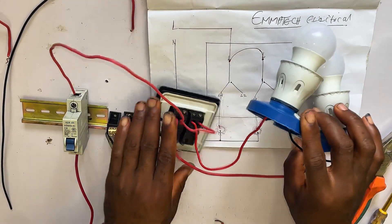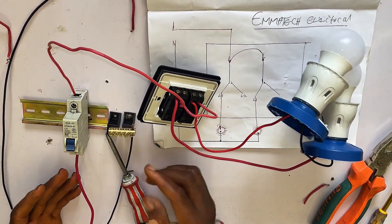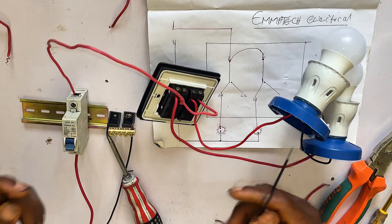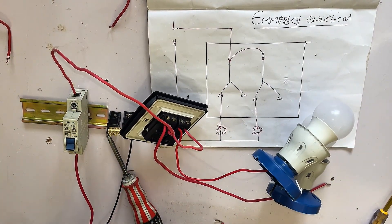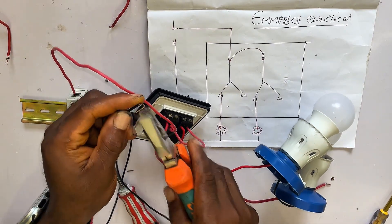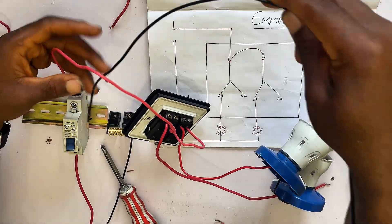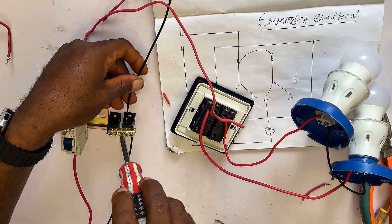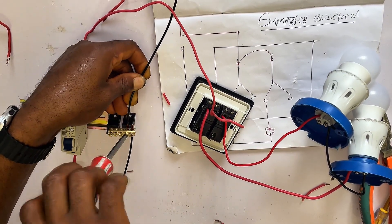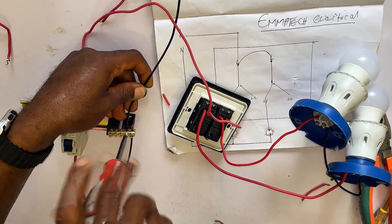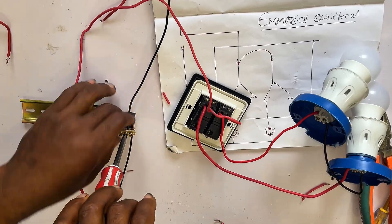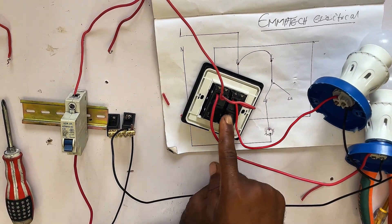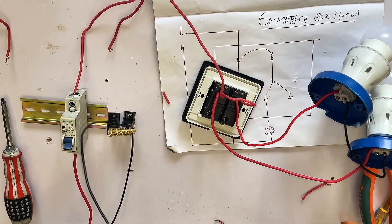Now what remains is our neutral wire. We are going to connect our neutral from the neutral link directly to our bulbs. You can see this is our neutral connector here. Pick a black wire like this and connect it to the neutral. Remember — you don't connect the neutral to your switch; the neutral goes directly to your bulb.